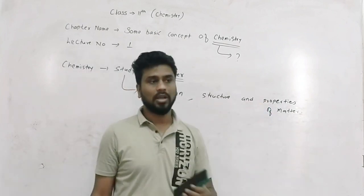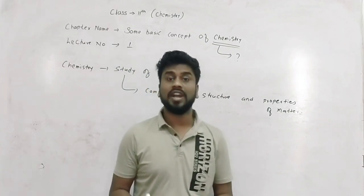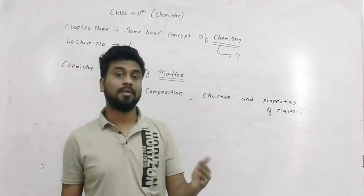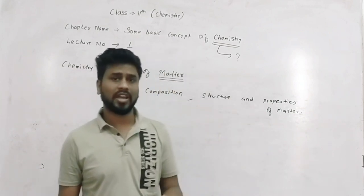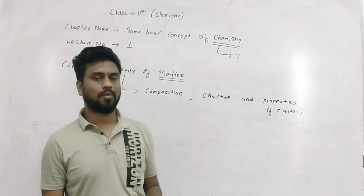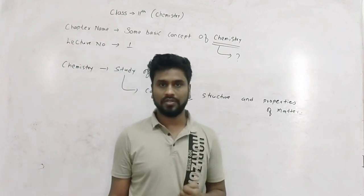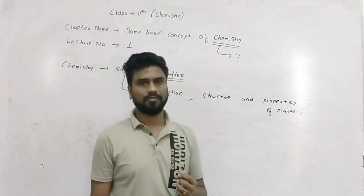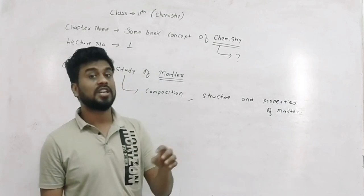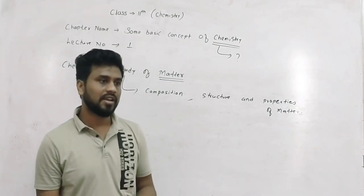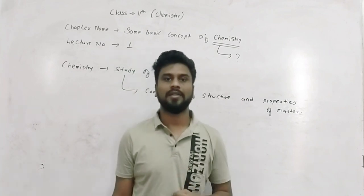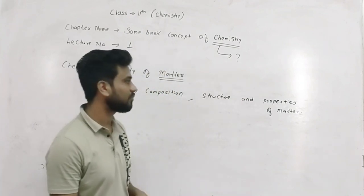Properties of matter — the characteristics of matter. Properties are of two types: physical properties and chemical properties. Physical properties include what is the physical state of the substance — solid state, liquid state — what is the boiling point, what is the melting point, what is the density, toughness, hardness.